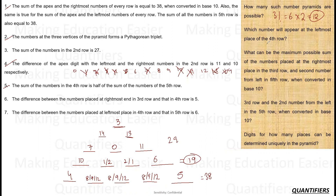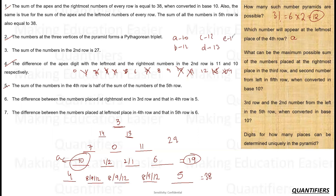Question 2: Which number appears at the leftmost place in the fourth row? The answer is 10, which in base 15 notation is written as 'a'. Remember: 10 = a, 11 = b, 12 = c, 13 = d, 14 = e.